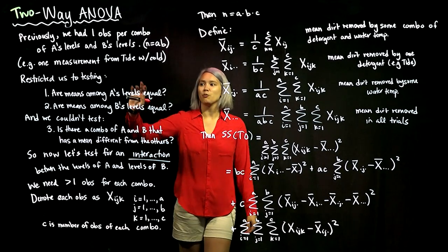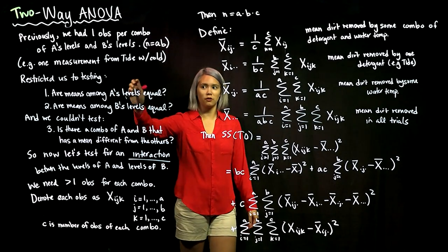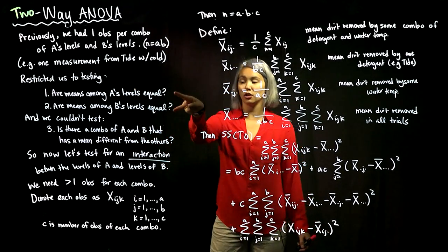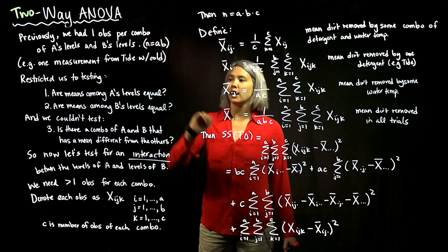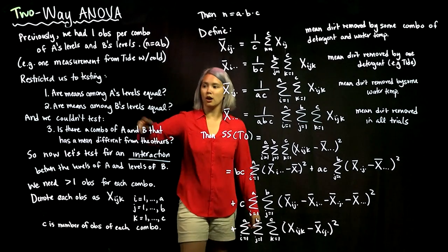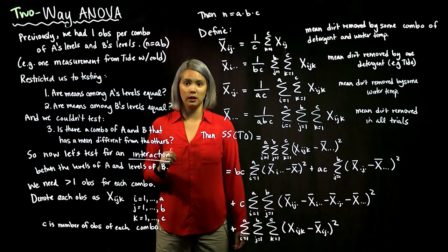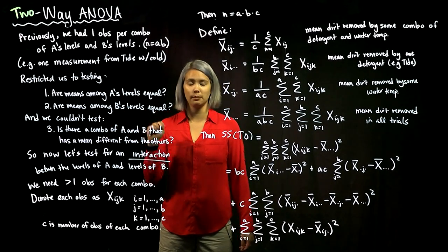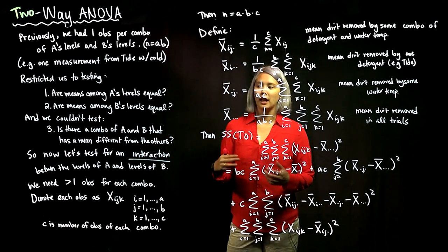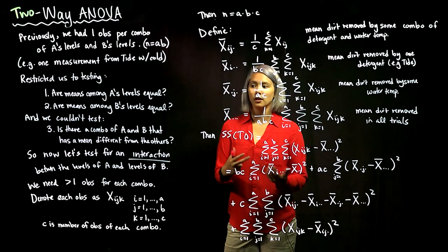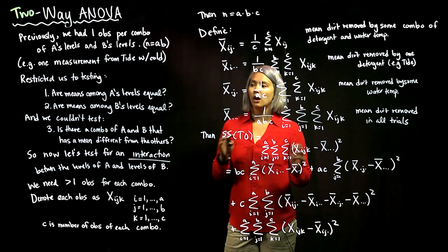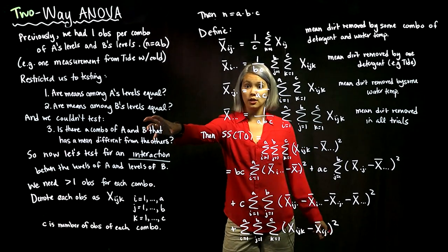When we only had one observation for each combination of detergent and water temperature, we were restricted to testing just two hypotheses: are the means among A's different levels equal, and are the means among B's different levels equal? But we were not able to test whether some combination of A and B has a different mean from the other combinations of A and B.